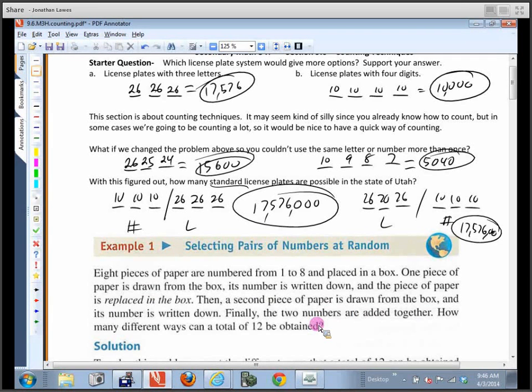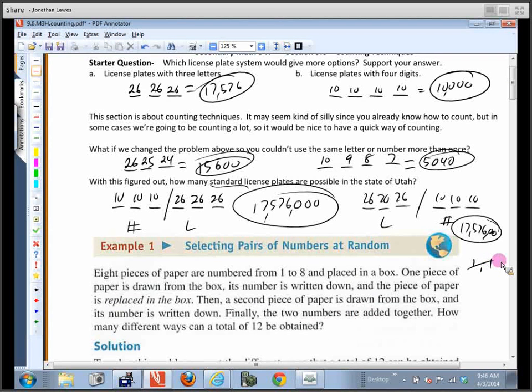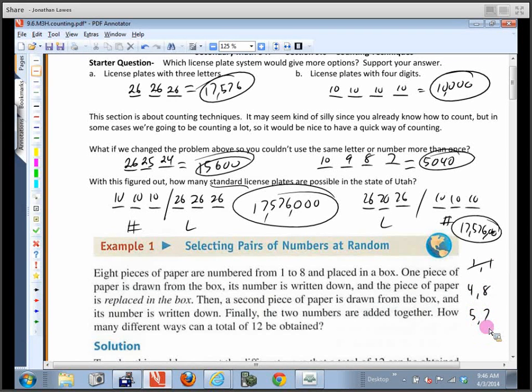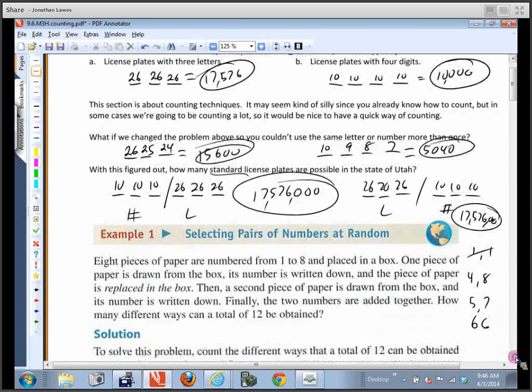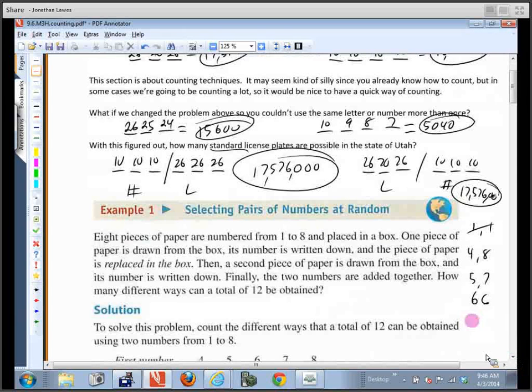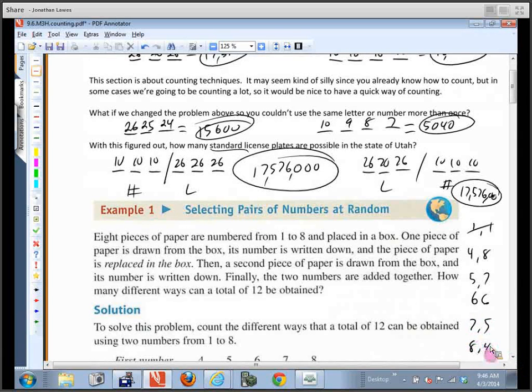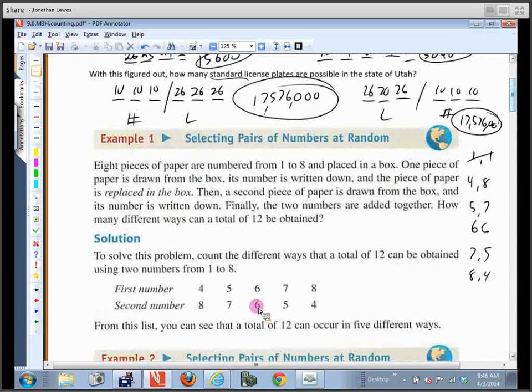How many different ways can a total of 12 be obtained? Well, if the digits are one through eight, if I draw a one and then another one, do I get a 12? No. So let's think about this. How could I get a 12? What numbers would I have to draw? I could draw a four and an eight, a five and a seven, a six and a six. Anything else? Very good, because when we pull it out, we could also get a seven and a five, and we could get an eight and a four.